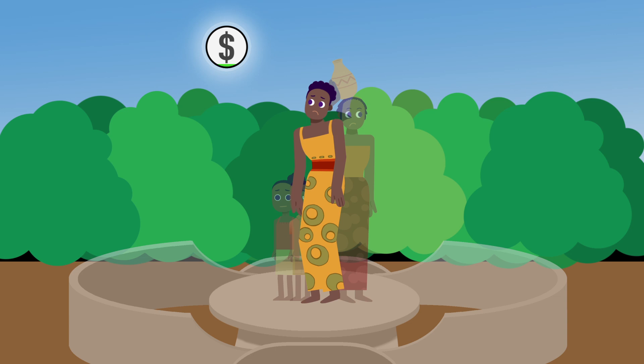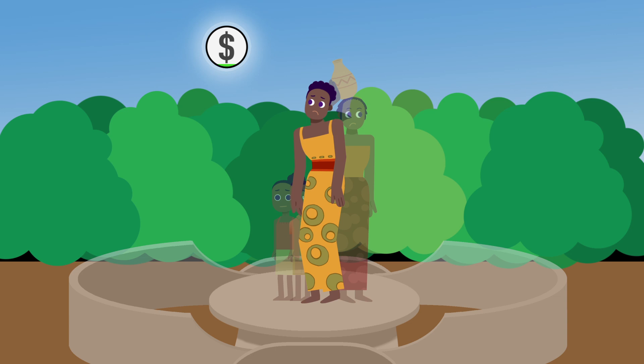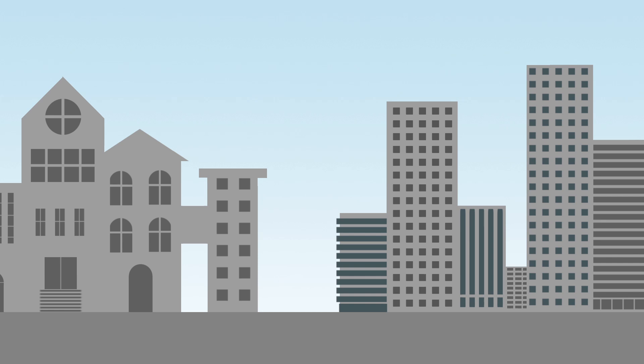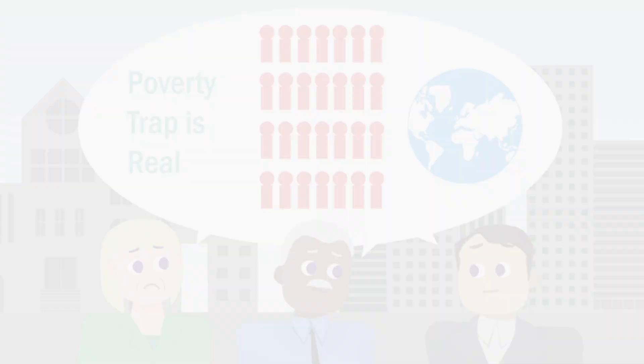Many people in the developing world are likely to be stuck in this trap and not able to get out, unless some other type of intervention occurs. What this intervention looks like is highly contested among academics, politicians, and even business experts. But one thing is for sure: the poverty trap is real and creates major problems for billions of people, not to mention our entire global economy.